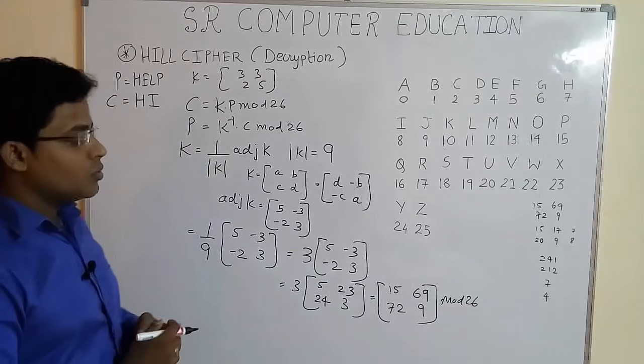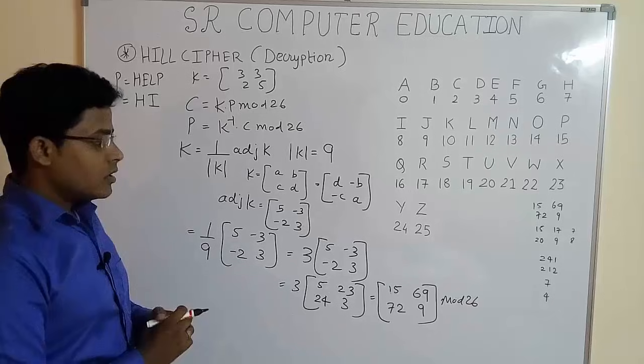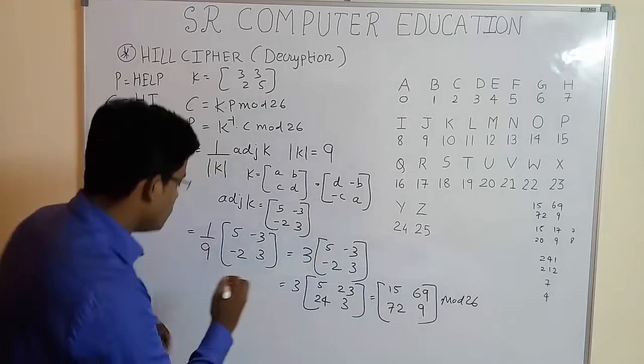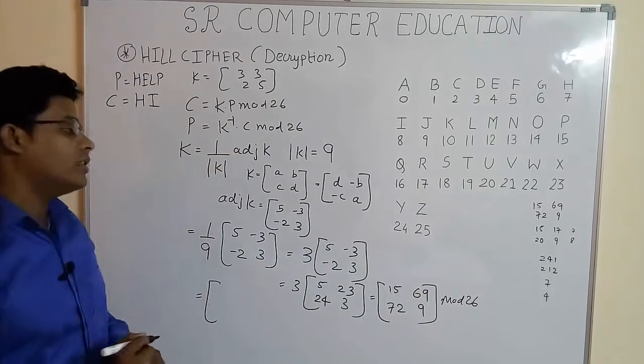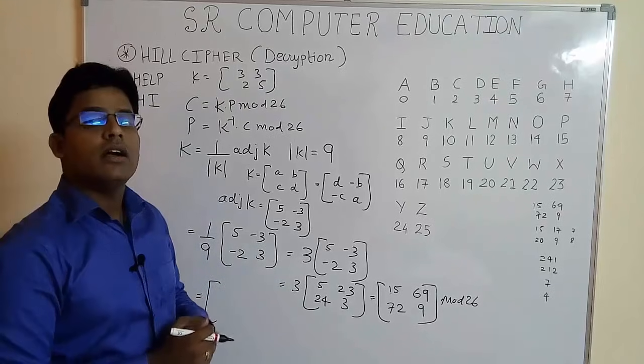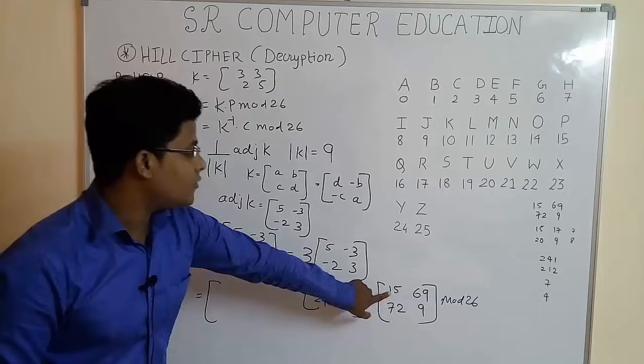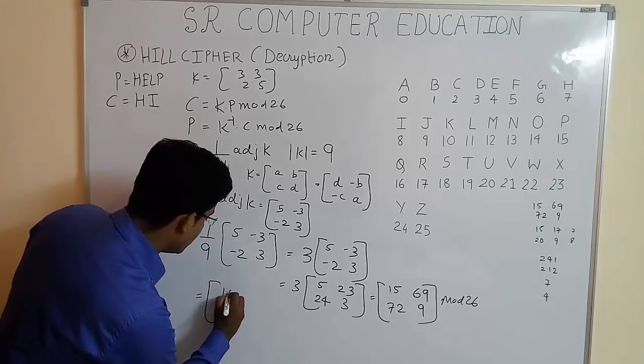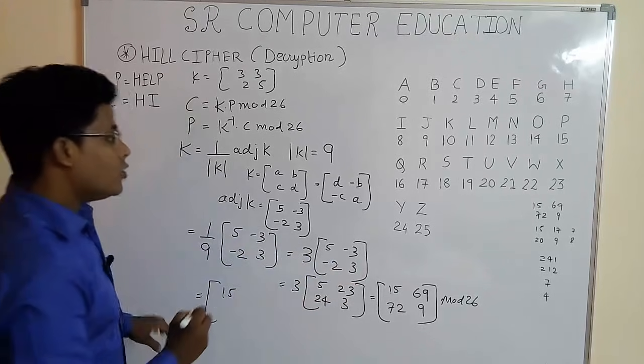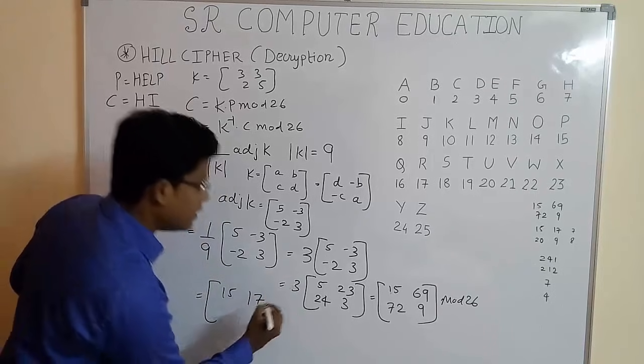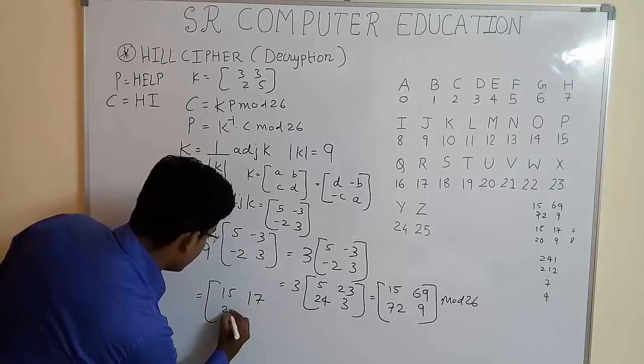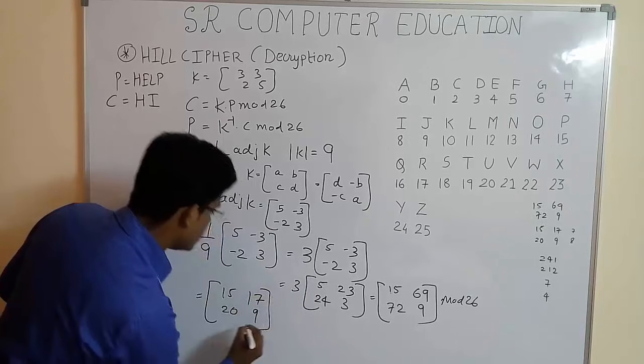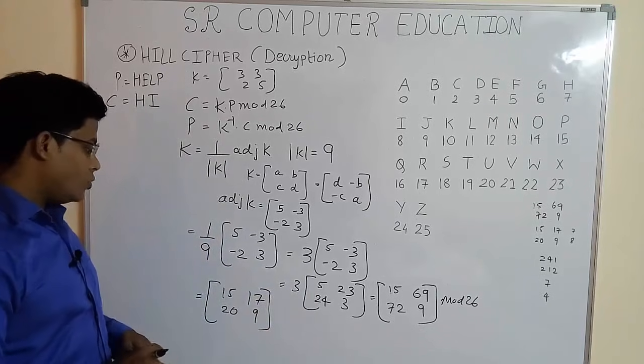I had already told you how to find the result of modulo operation. So here we get 15 modulo 26, you have to remember one thing. When 15 modulo 26 is there, the number 15 is smaller than 26, so answer is directly 15. Then 69 modulo 26, we get answer 17. 72 modulo 26, we get answer 20. And 9 modulo 26 is again 9 because the number 9 is smaller than 26.